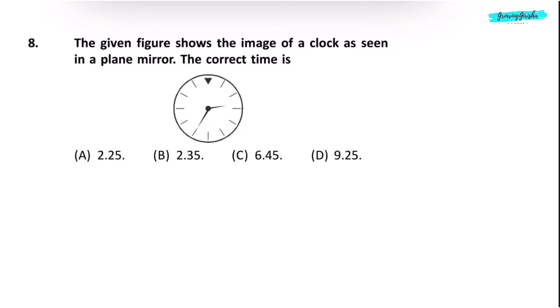Question 8. The given figure shows the image of a clock as seen in a plane mirror. The correct time is, suppose the mirror is on the right side. One of the hands is going above 3. And the minute hand is something like this. So we can say the time is 9:25. Correct answer is option D.